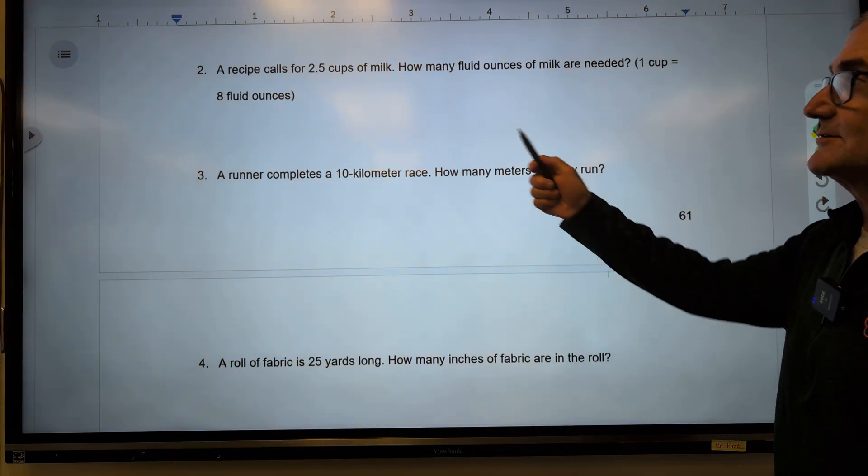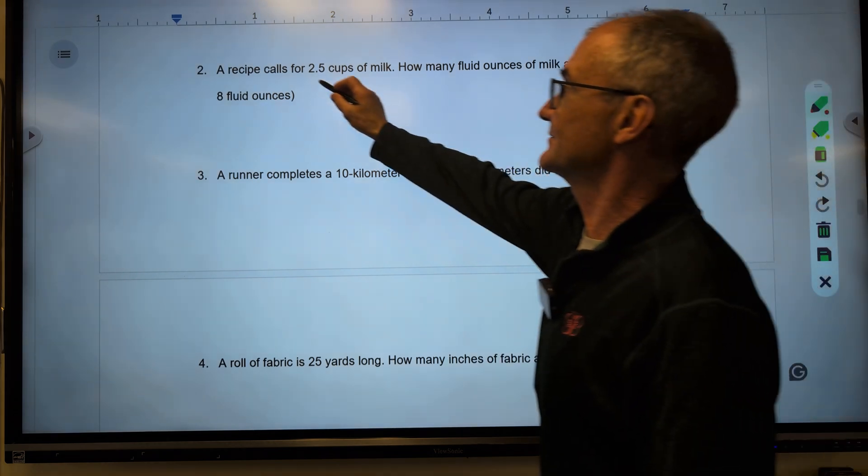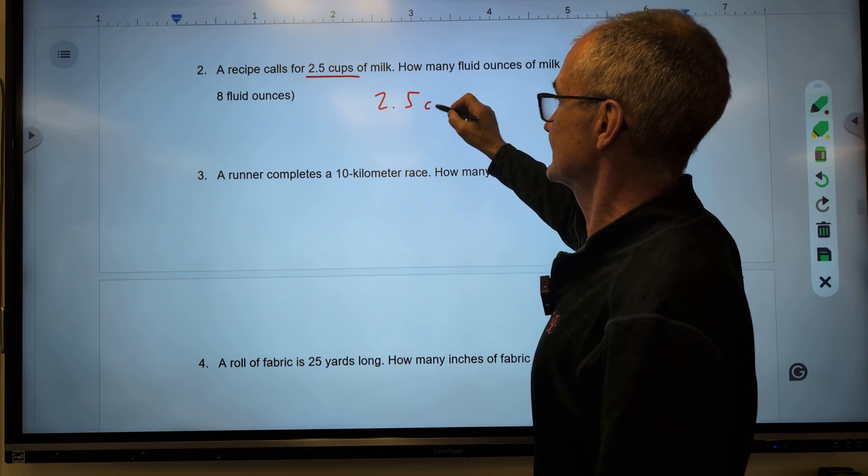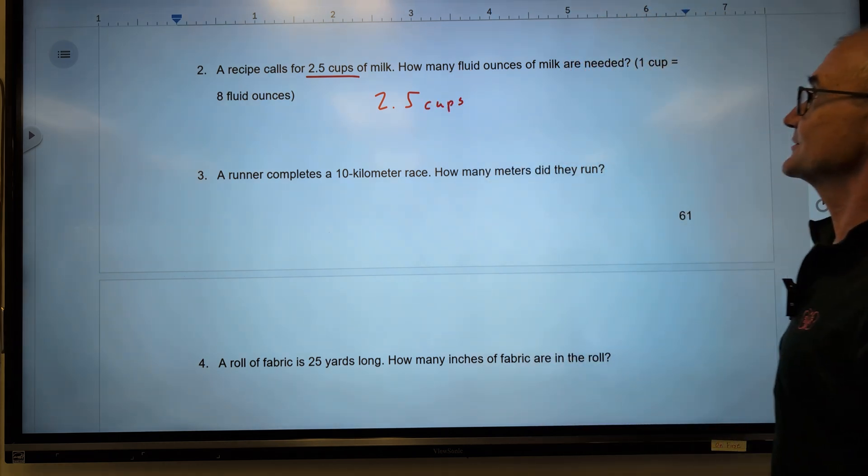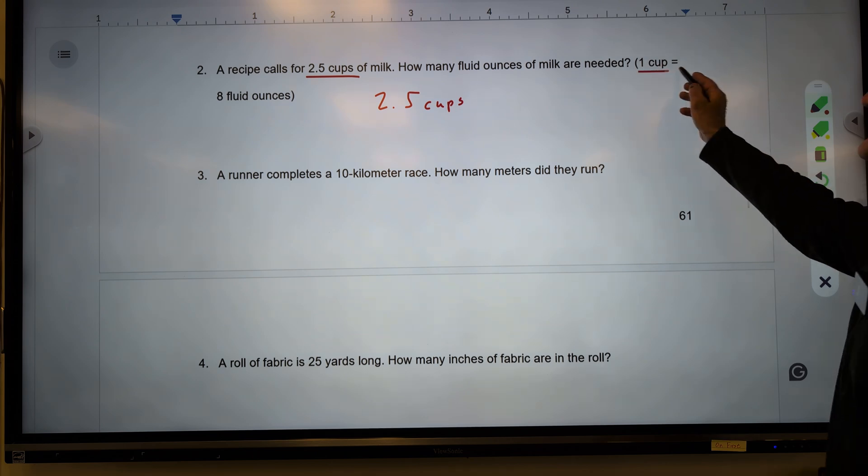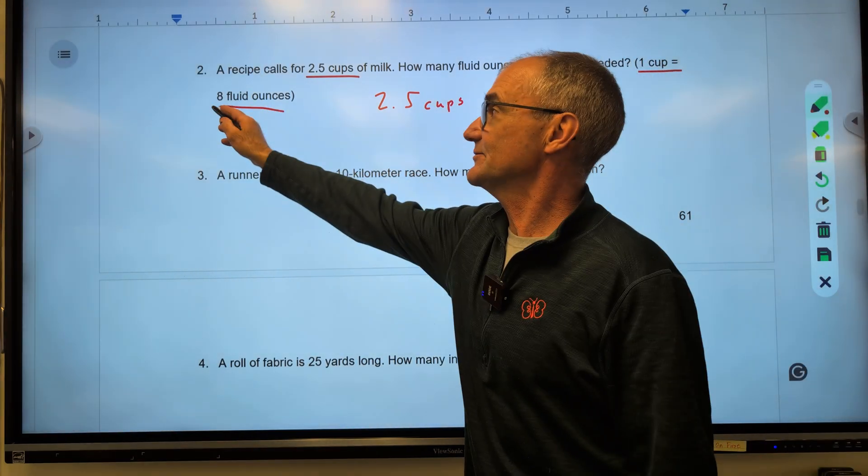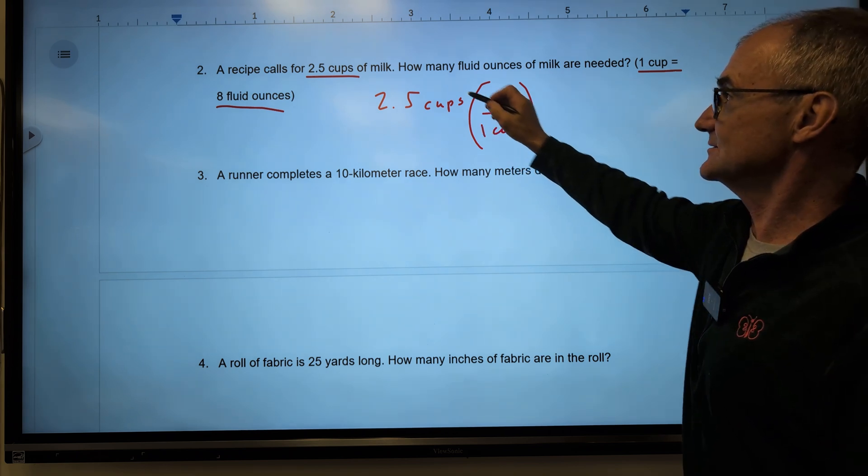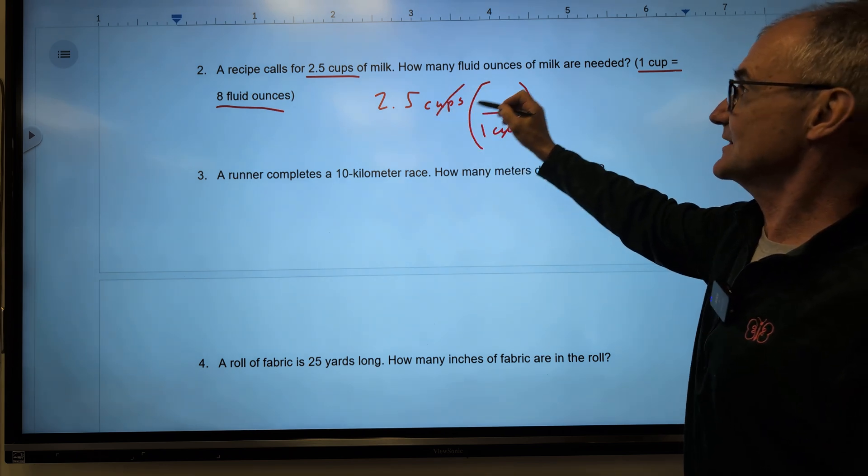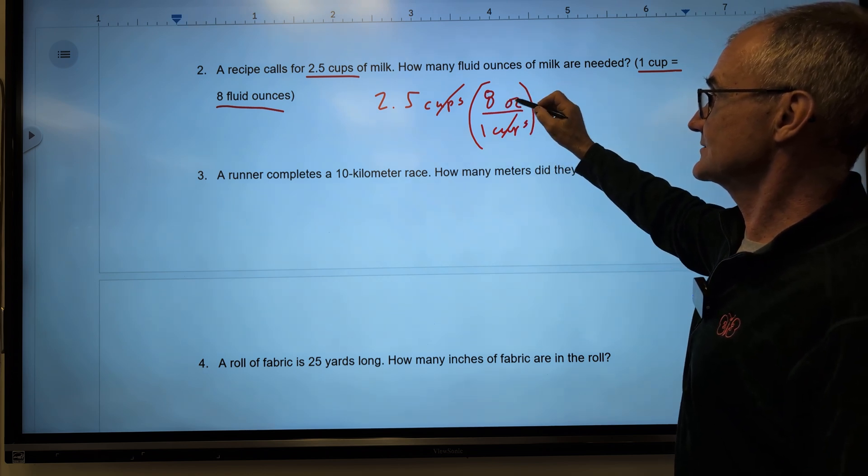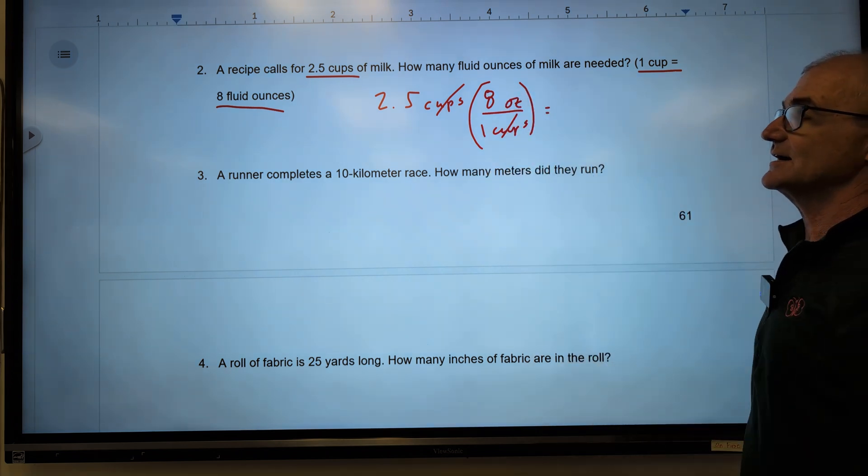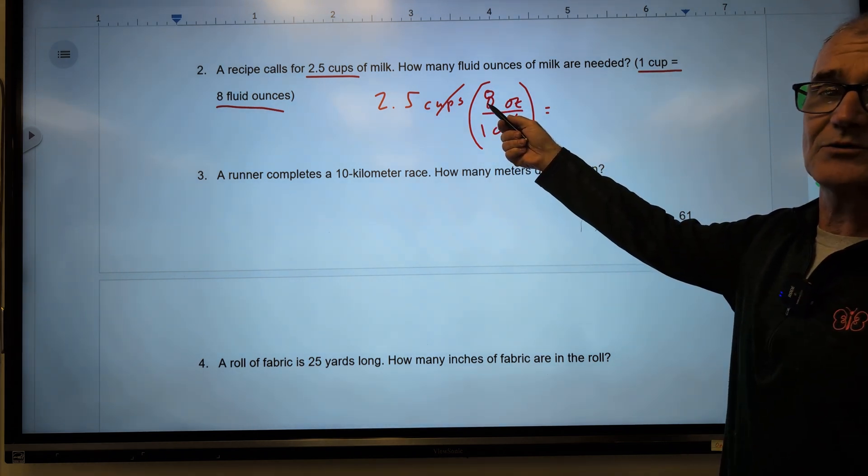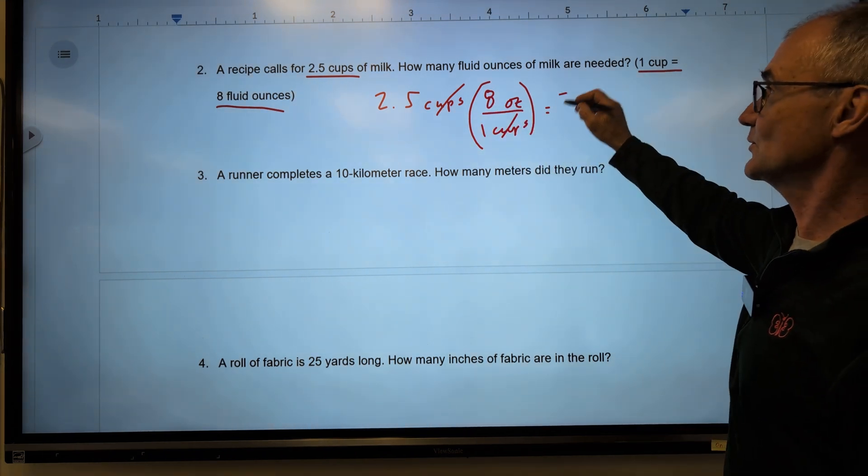We'll just do a couple more right here. A recipe calls for 2 1⁄2 cups of milk. How many fluid ounces of milk are needed? Well, they give us our conversion. One cup is 8 fluid ounces. The key to remember is cups have to go down here to cancel, and one cup is 8 fluid ounces. So I do 8 times 2.5, 16 plus 0.5 times 8 is 4, so 16 and 4 is 20 ounces.